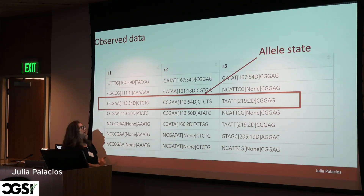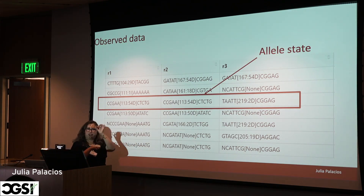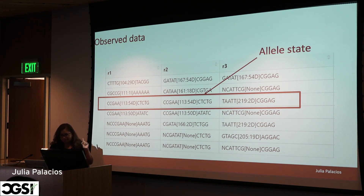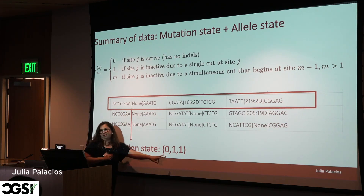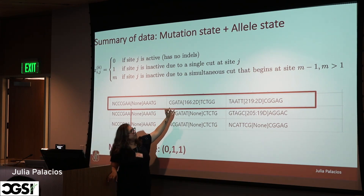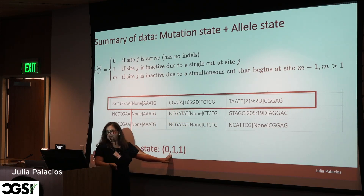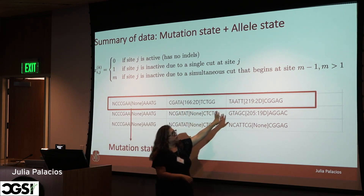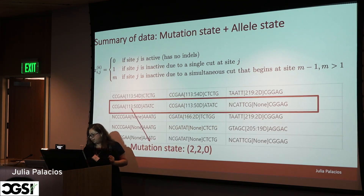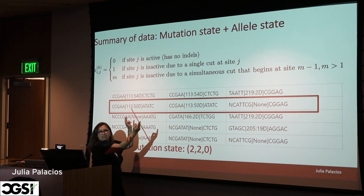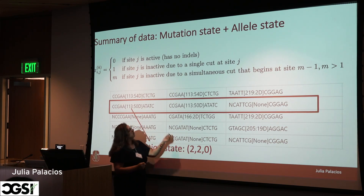Going back to what the data looks like: I'm going to define a 'little state' as a specific position and number of base pairs deleted or inserted. I'll map those into what I'm calling mutation states. If there are no changes it's coded 0. If there is one change that only involved that specific site it's coded 1. Two different mutations at the same position get different codes.